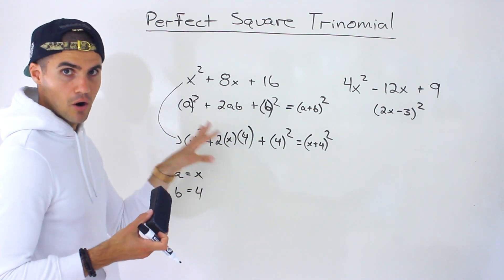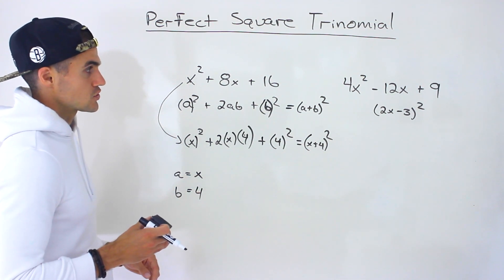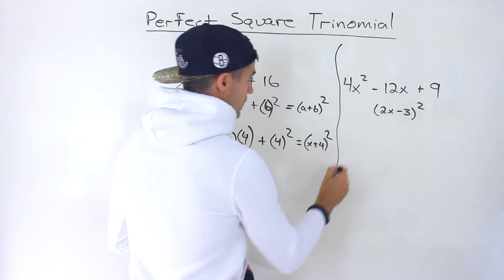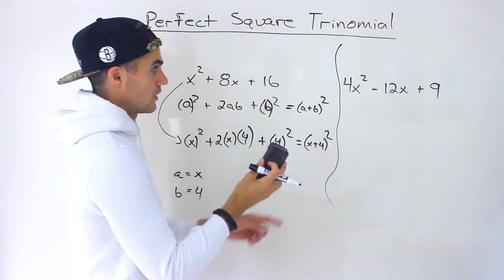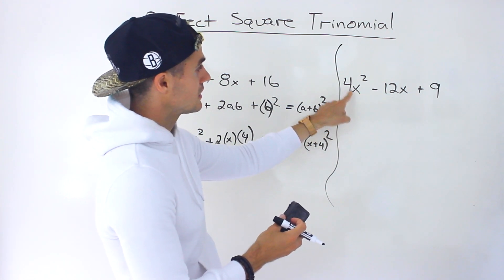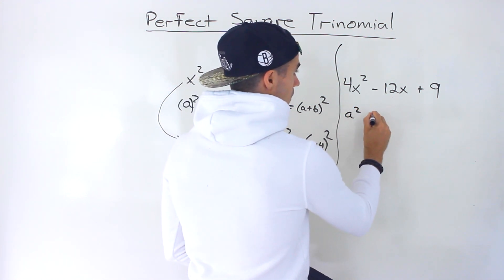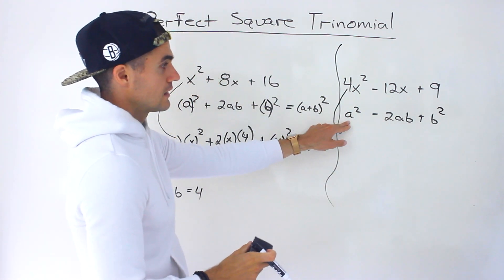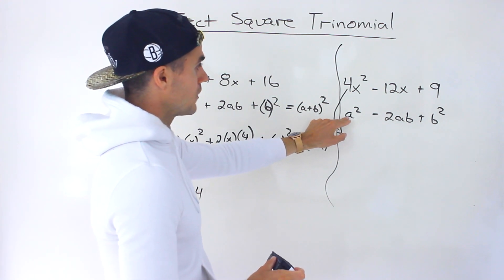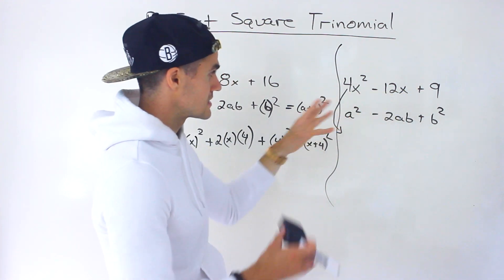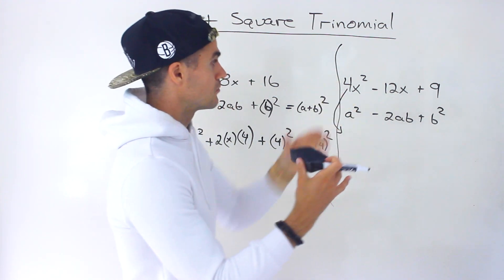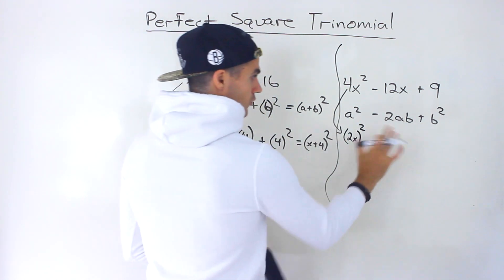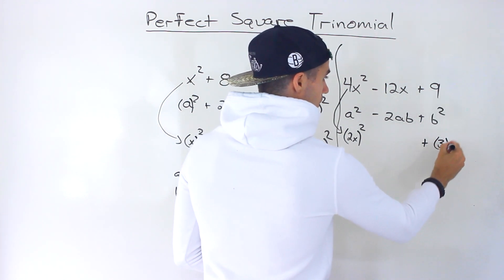If your teacher doesn't require the formula, you can ignore that part and just work perfect square trinomials with decomposition. Now for the second formula, since our second example has a negative middle term, we use A squared minus 2AB plus B squared. Taking 4x squared minus 12x plus 9, rewrite the end terms: 4x squared becomes 2x squared, and 9 becomes 3 squared.